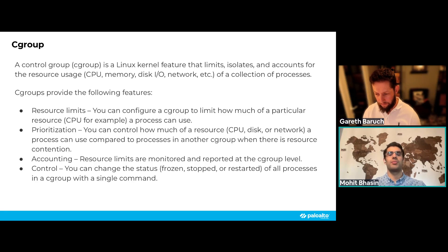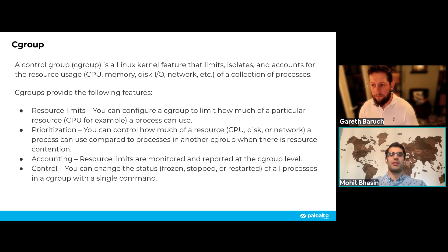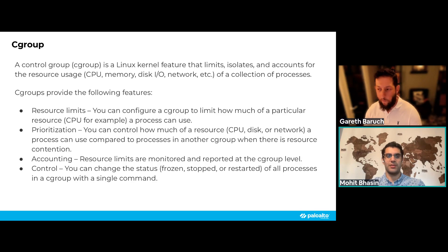Control groups are a Linux kernel feature that limit and isolate processes for resource usage. They allow you to control how much resources containers use, prioritize processes, and determine which container gets resources when two containers compete for the same ones. They also perform basic accounting by monitoring different levels of resource usage.